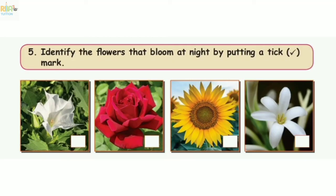Section 5: Identify the flowers that bloom at night by putting a tick mark. The first plant — it is active at night, so tick it. The rose is a daytime flower, so no tick. The sunflower is a daytime flower. The tuberose is active at night, so tick it.